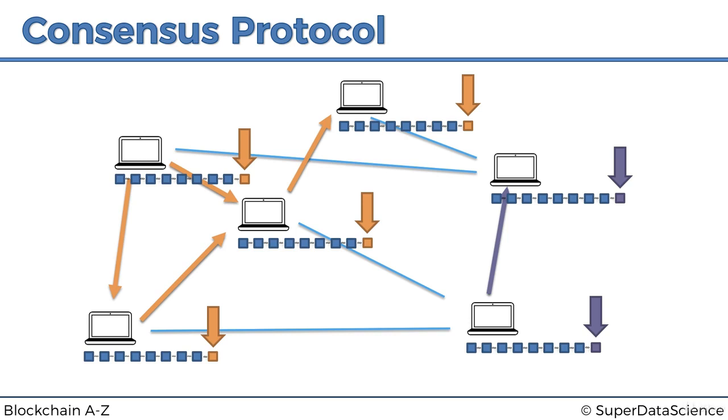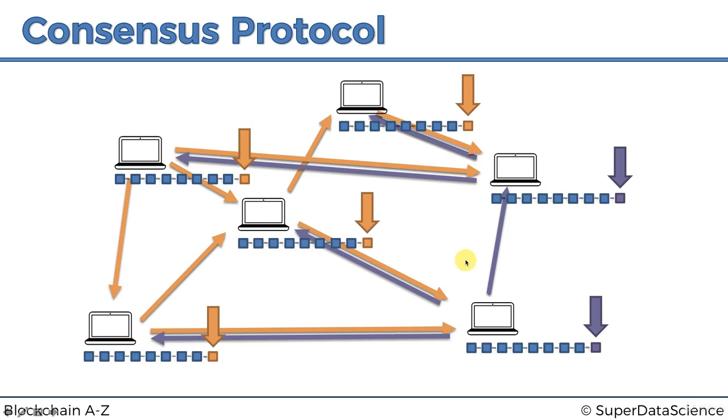Now this node and these nodes are trying to tell this node to add the orange block, but this node is saying to these guys to add the purple block. Finally the connections gone through—we've got an issue. You can probably tell that it's very similar to the Byzantine generals problem when you've got conflicting messages going across the network.